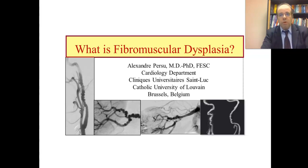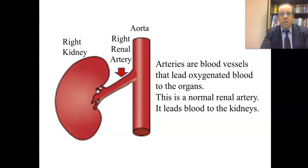The knowledge may evolve over time. This is a large vessel. To the right is the aorta. The organ to the left or to the right of the subject is the kidney, and between both is the right renal artery. Arteries are blood vessels that lead oxygenated blood to the organ. What you can see here is a normal renal artery leading blood to the kidney.